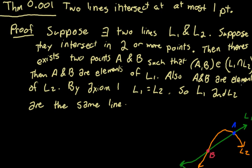Then because they're on each line, they must be part of each line. But by axiom 1, those two lines must be the same line. So we are done with the proof.